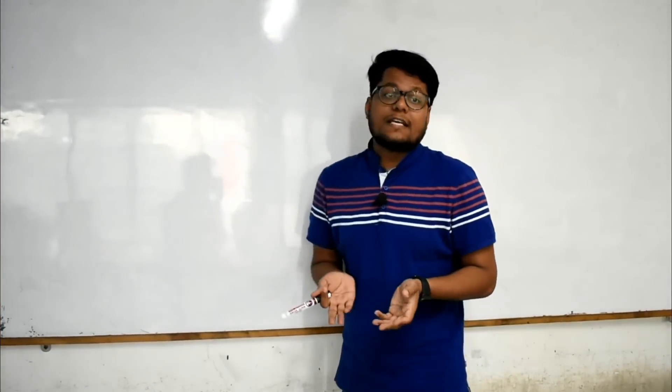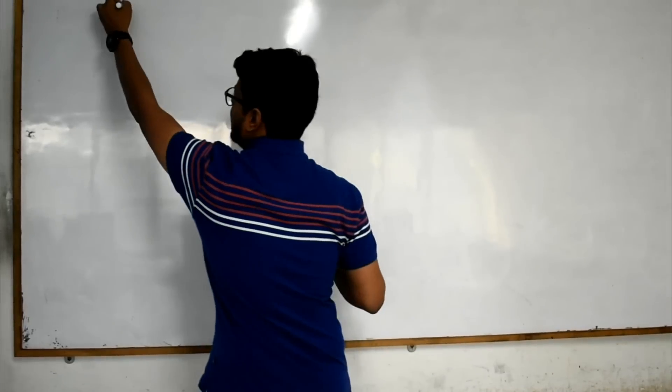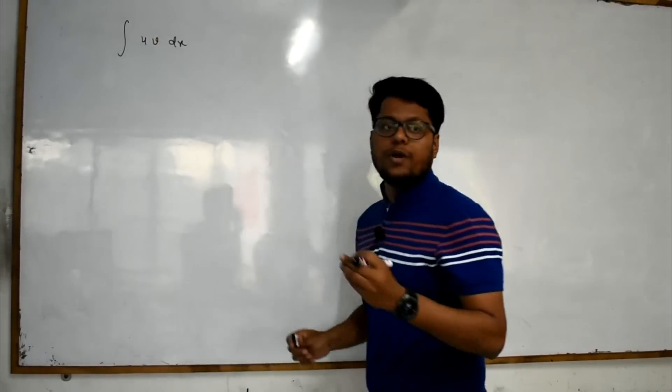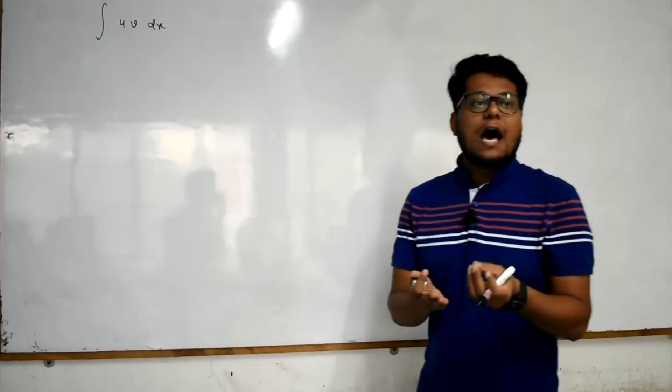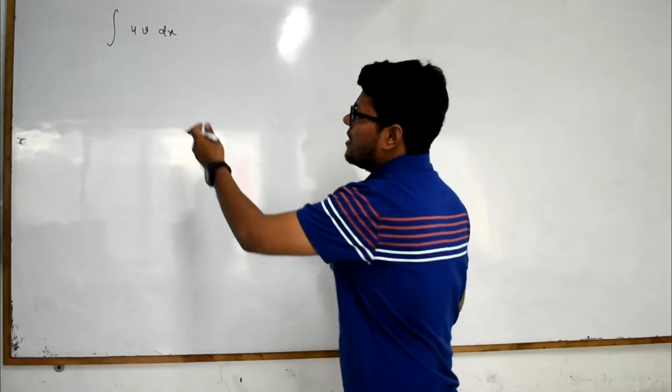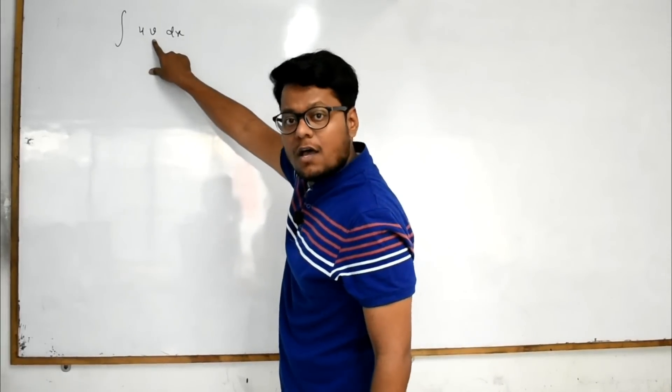Now what is the case when this method arises, when this method should be applied? The case is when two independent functions are in a multiplication and we want to do the integration of that. The first function is considered as u and second one is considered as v.